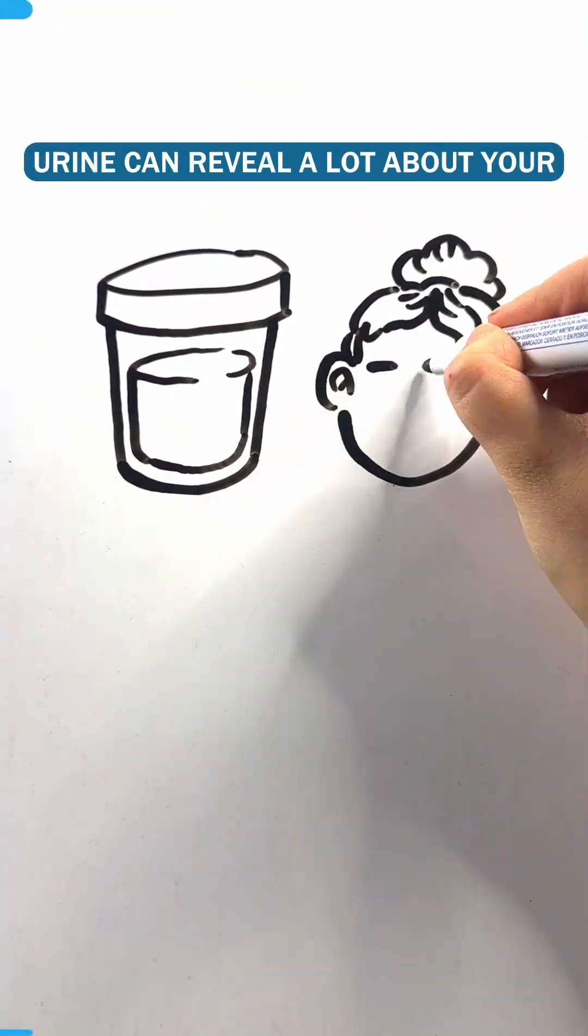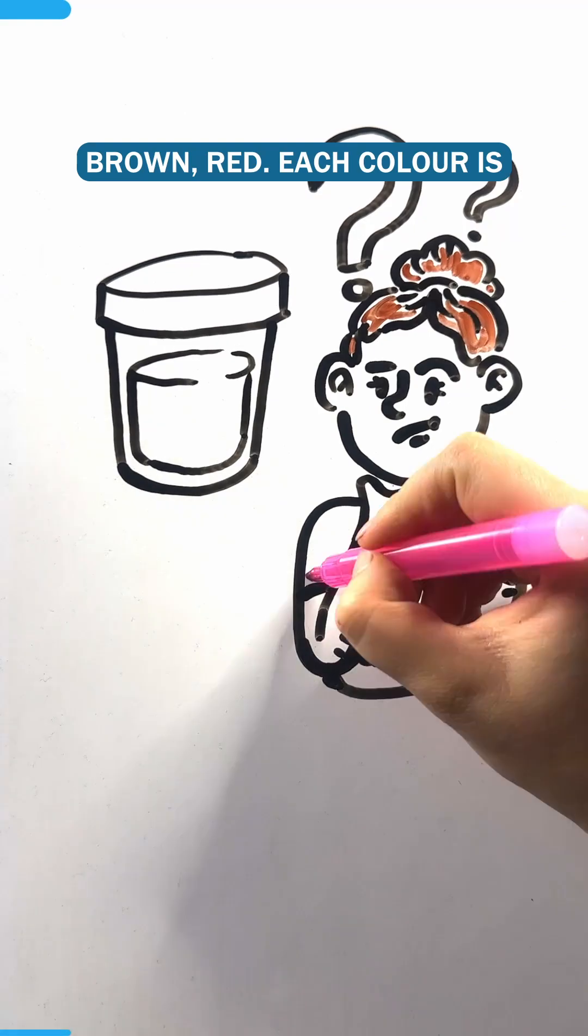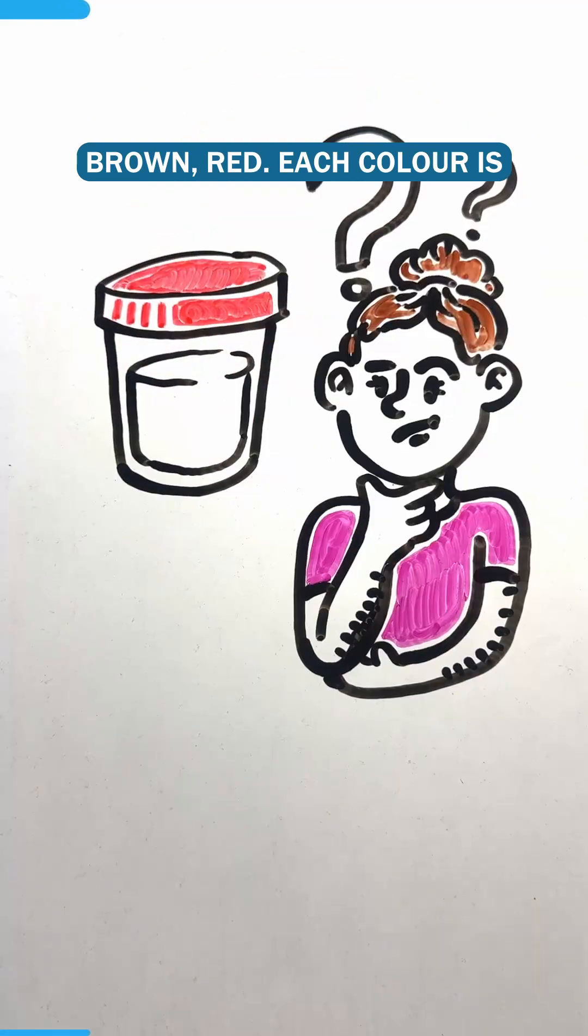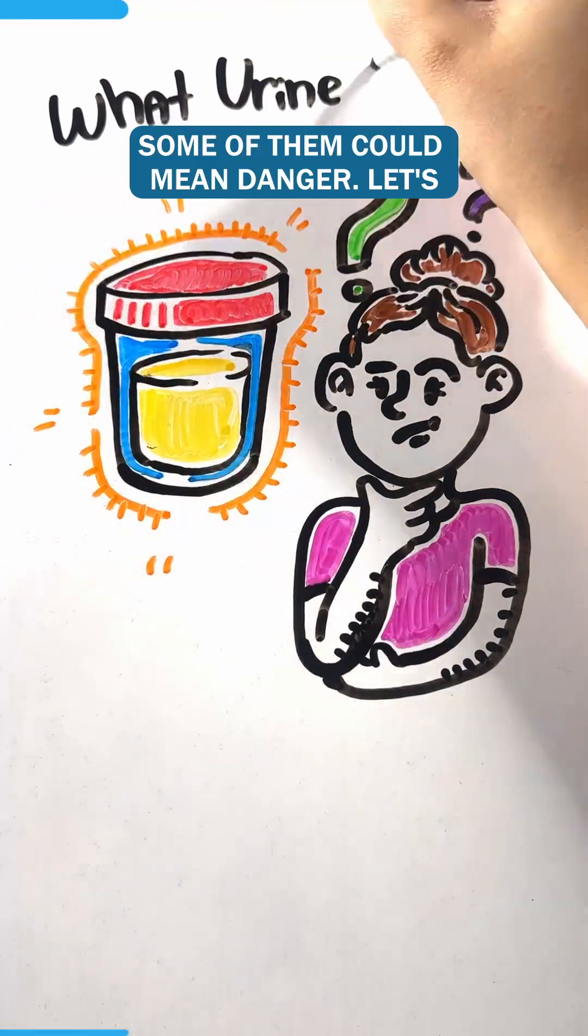Did you know that the color of your urine can reveal a lot about your health? Bright yellow, dark brown, red. Each color is a sign your body is sending, and some of them could mean danger.